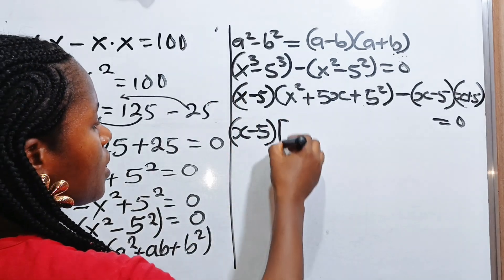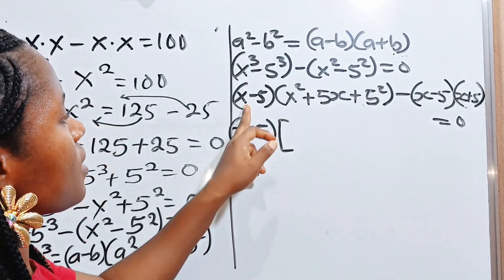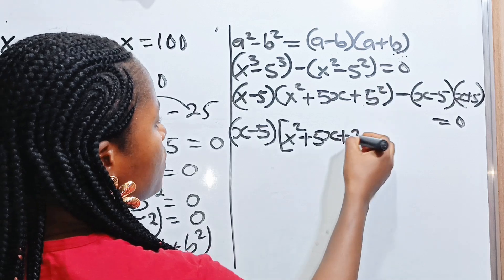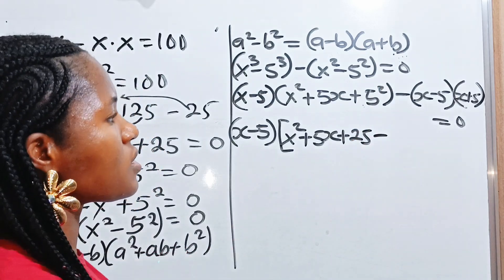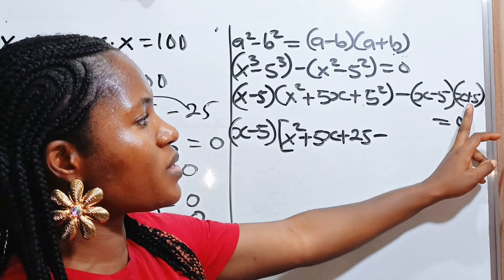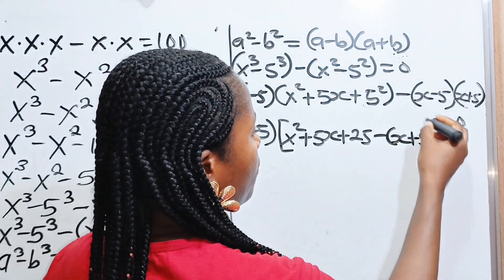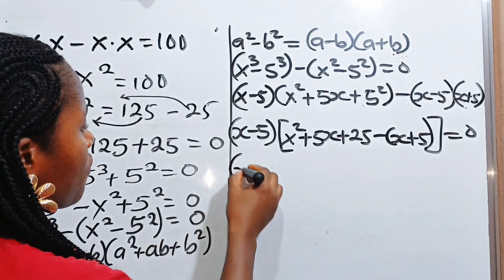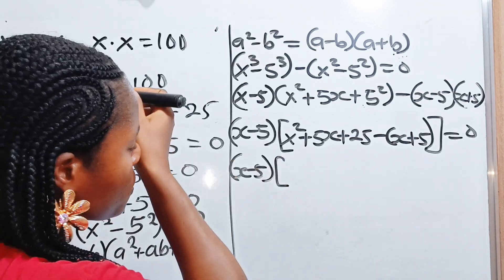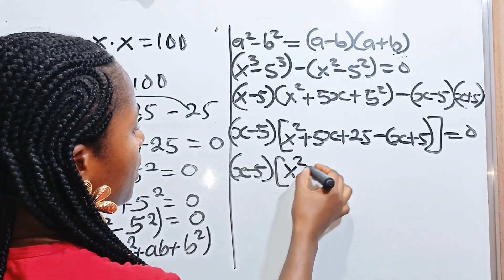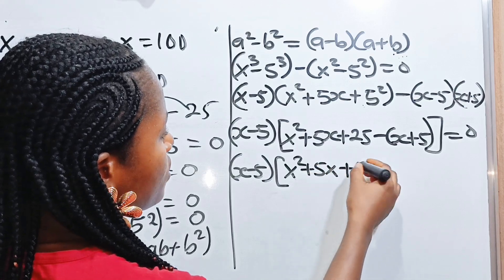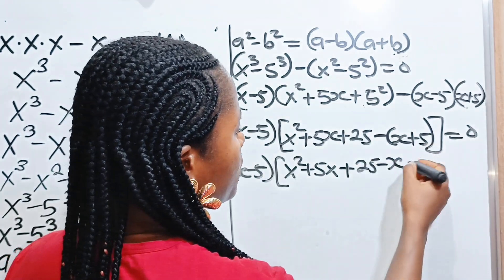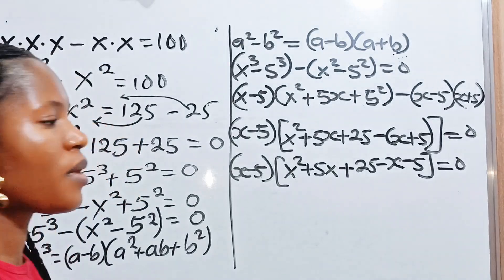Let's factorize out x minus 5. When x minus 5 is divided out, we have x squared plus 5x plus 25 remaining from the first bracket. Then minus, when x minus 5 is divided from the second bracket, we are left with x plus 5. So we have x minus 5 times x squared plus 5x plus 25, minus times x minus 5 times x plus 5, equals 0.